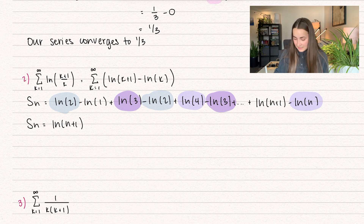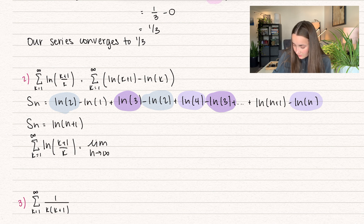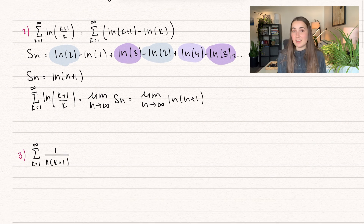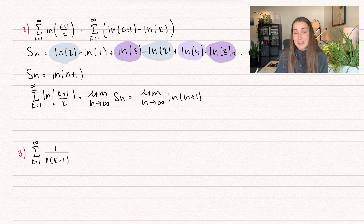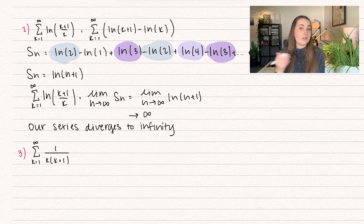Now let's see if this diverges or converges. Our actual series, the summation from k equals 1 to infinity of natural log of (k+1) divided by k, equals the limit as n goes to infinity of our partial sum — natural log of n plus 1. As n goes to infinity, natural log of infinity goes to infinity. So this diverges to infinity. Even though all those terms are canceling out in between, natural log of n plus 1 is forever getting bigger, so this series is forever getting bigger.